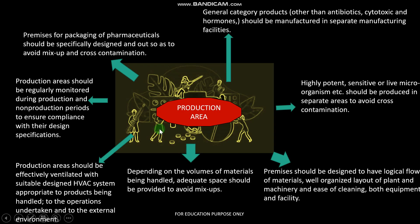Now let's talk about the production area where the main processing and production work happens. General category products, other than antibiotics or cytotoxic hormones, should be manufactured in separate manufacturing facilities. Highly potent, sensitive, or live microorganisms should be produced in separate areas to avoid cross-contamination. If you have a microbiological product — for example, a vaccine or serum — there are different criteria and separate production area requirements. Tablets, injectables — each dosage form has different production requirements.